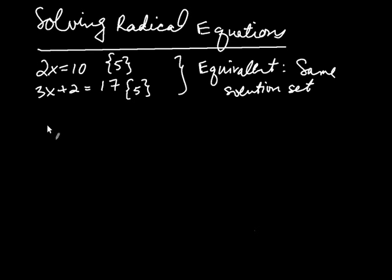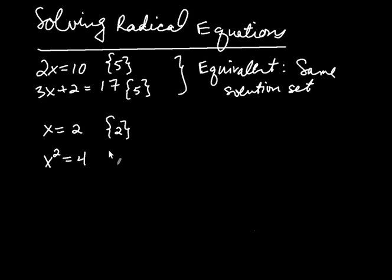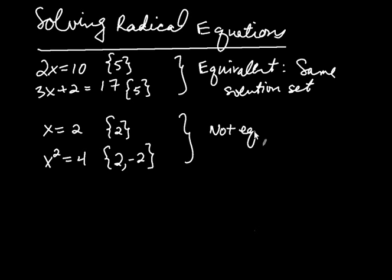Now consider these equations: x is equal to 2, and if we square both sides, x squared is equal to 4. The only number that makes the first equation true is 2. But for the second equation, there are actually two numbers that make it true: 2 and also negative 2. So we see right away that these two equations are not equivalent, because the first is true only when x is 2, while the second is true when x is 2 and negative 2.